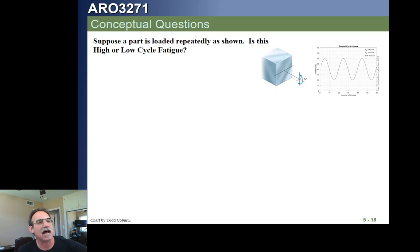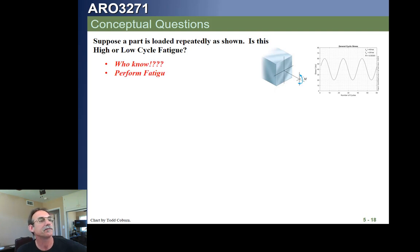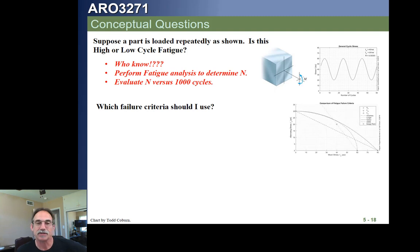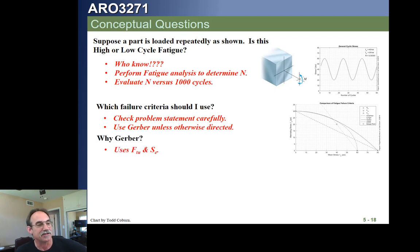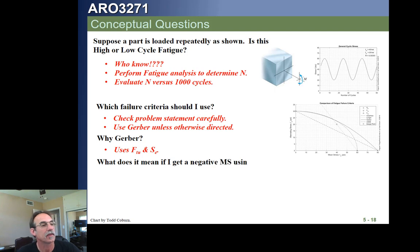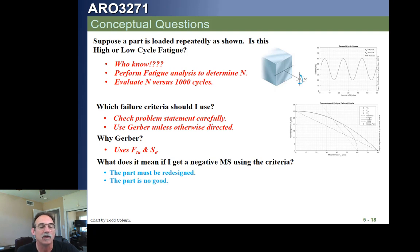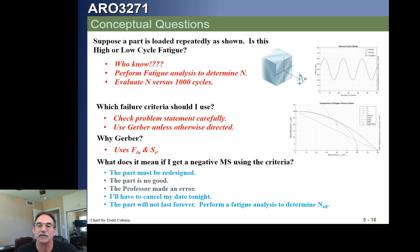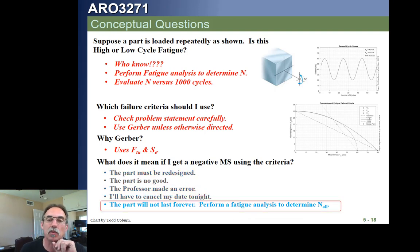Let's look at a couple of conceptual questions. If we have a part loaded repeatedly as shown — is this high-cycle or low-cycle fatigue? We'd have to evaluate the maximum stress against F_TU to figure out which one it is. Which failure criterion should we use? That depends on the problem statement, but if it doesn't say anything, we use Gerber — because it uses F_TU, which is consistent with what we're doing for other types of analysis, and S_e, which is appropriate for alternating components. If we get a negative margin for that criteria, it means the part will not last forever and we need to reanalyze with more analysis.